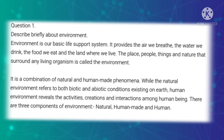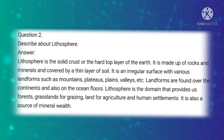First essay question: Describe briefly about environment. Answer: Environment is our basic life support system. It provides the air we breathe, the water we drink, the food we eat and the land where we live. The place, people, things and nature surrounding any living organism is called the environment. It is a combination of natural and human-made phenomena. The natural environment refers to both biotic and abiotic conditions existing on earth; human environment reveals the activities, creations and interactions among human beings. There are three components of environment — natural, human-made and human.